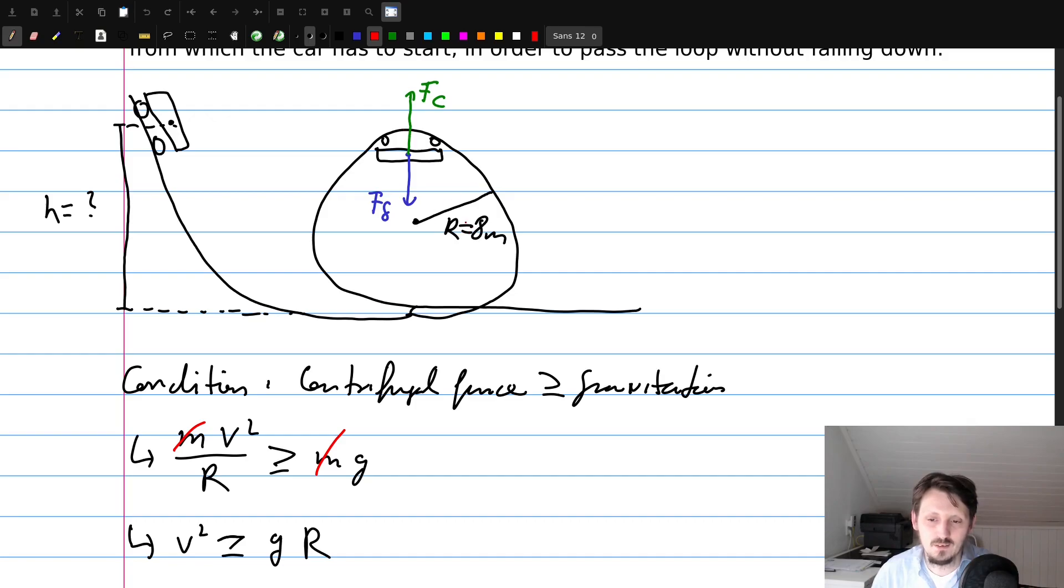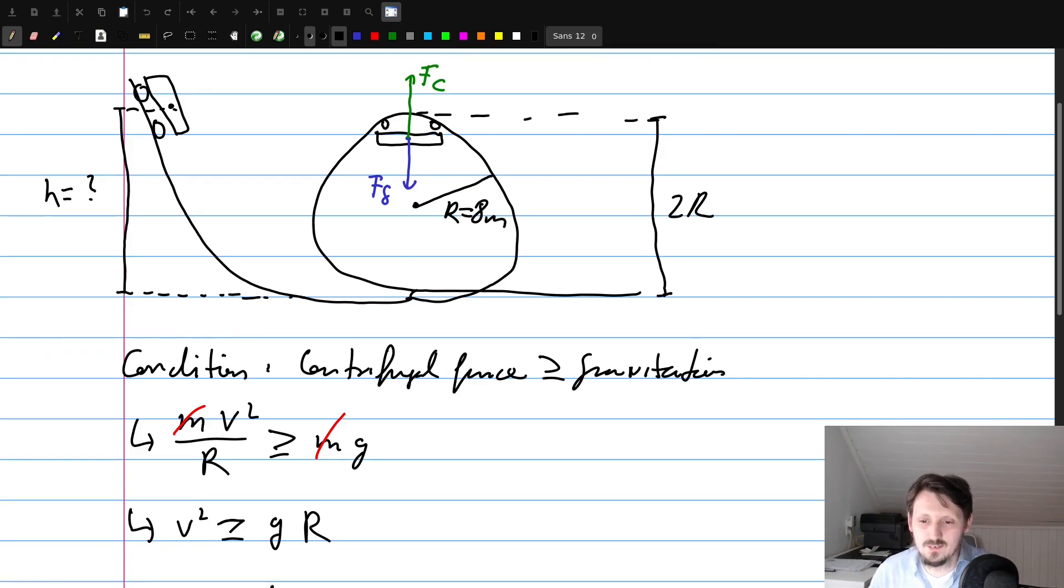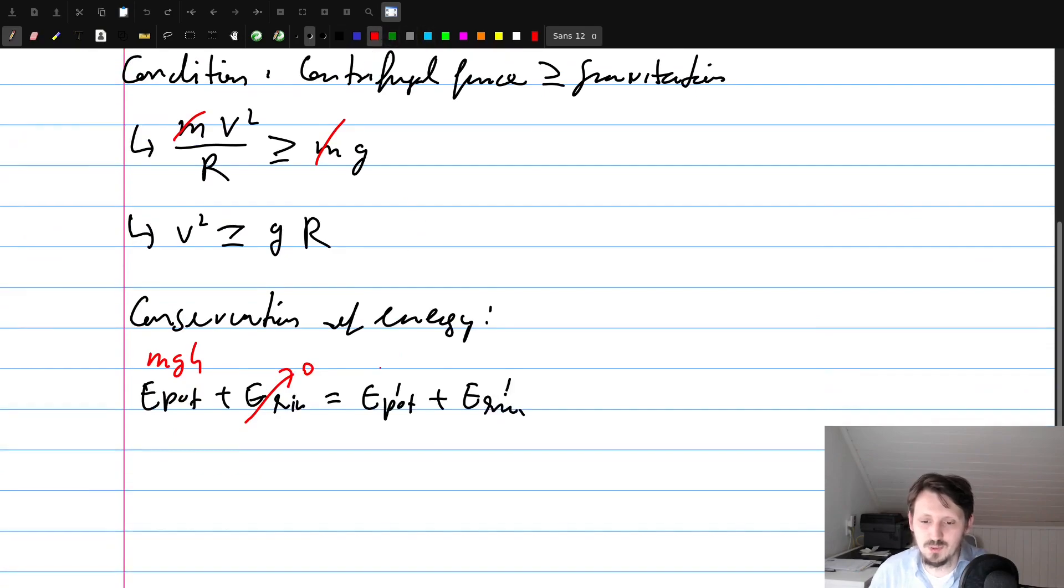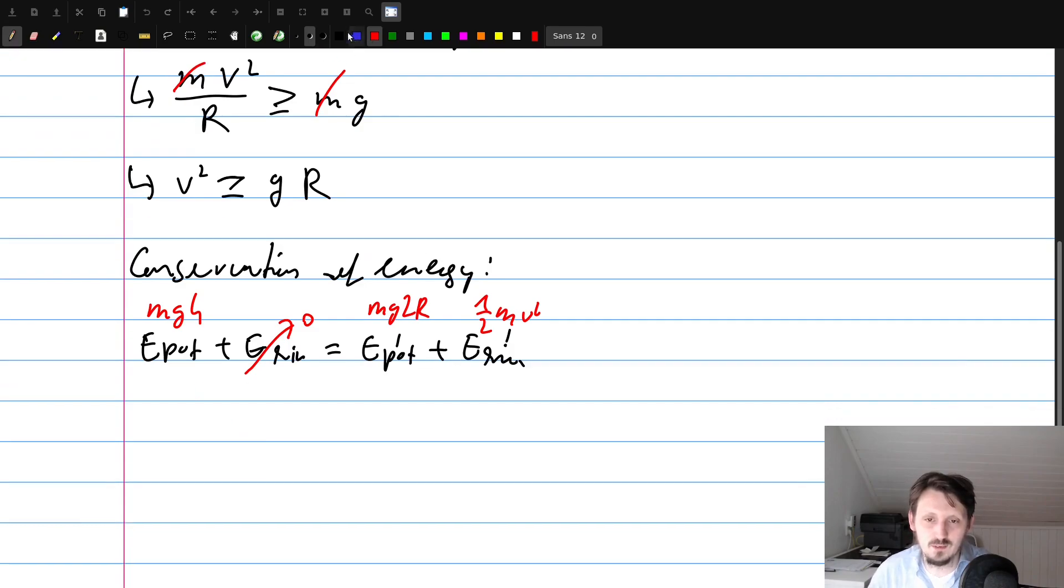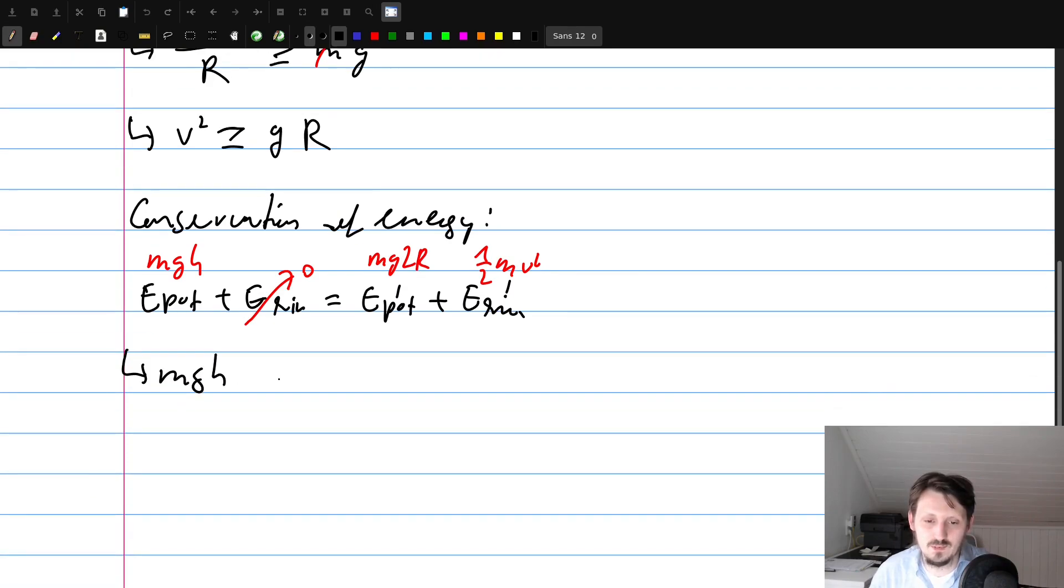So here E pot and E pot prime and E kin prime are actually the kinetic and potential energy at this maximum height here, which is given as 2r. This we can also maybe just insert into our sketch, so this is actually 2r. Then we can write here of course that the potential energy must be mg 2r, this is the height, and the kinetic energy we don't know, so we can actually directly insert this general formula, one half m v squared. Then you can also see here why we used v squared, because we can use this v squared directly from here.